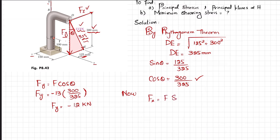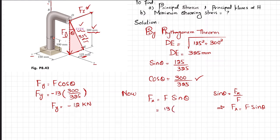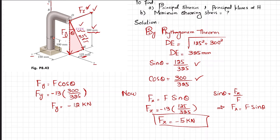Fz equals F·sin(theta). Putting in the values: F is 13 and sin(theta) is 125 over 325. Since this force acts in the negative z-direction, Fz equals minus 5 kilonewtons.